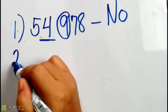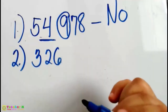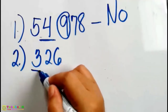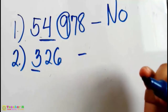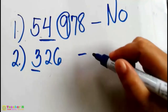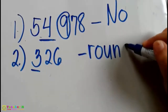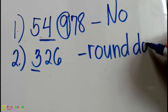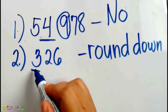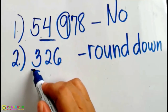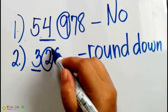Number 2: The number is 326, and the underlined digit here is 3. Are we going to round this number down or no? We are going to round this number down, so the answer is round down. Because the digit we are rounding off is 3, and 3 is followed by the digit 2.